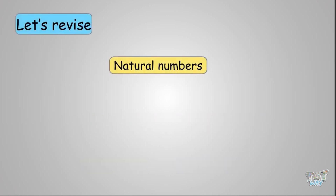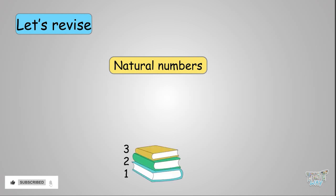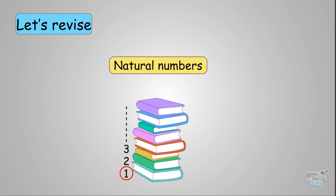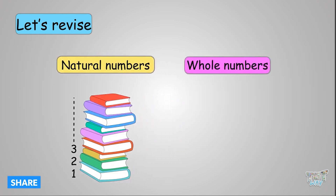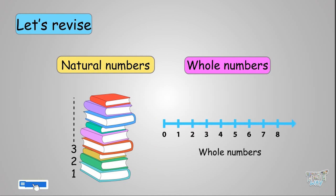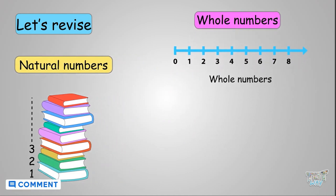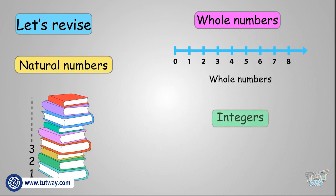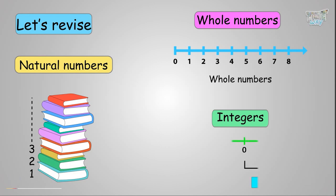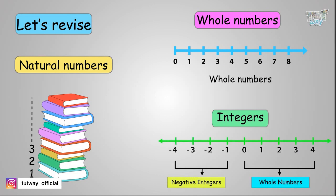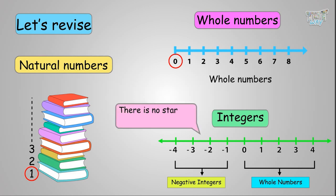Let's recap. Natural numbers are the counting numbers — they come naturally when we count something, and they start with 1. Whole numbers add 0 to the list of natural numbers. Integers are numbers that include whole numbers as well as negative numbers. So natural numbers start with 1, whole numbers start with 0, and integers — well, there is no starting number for integers.